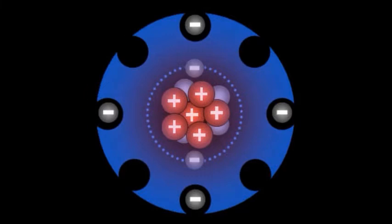Isotopes are variants of atoms of a particular chemical element which have differing numbers of neutrons. Atoms of a particular element by definition must contain the same number of protons but may have a distinct number of neutrons, which differs from atom to atom without changing the designation of the atom as a particular element. The number of protons and neutrons in the nucleus, known as the mass number, is not the same for any two isotopes of any element. For example, carbon-12, carbon-13, and carbon-14 are three isotopes of the element carbon with mass numbers 12, 13, and 14.